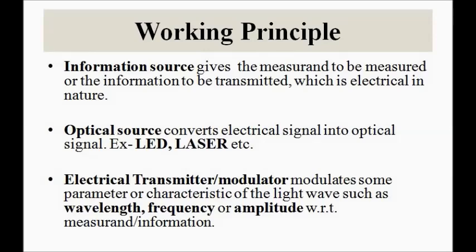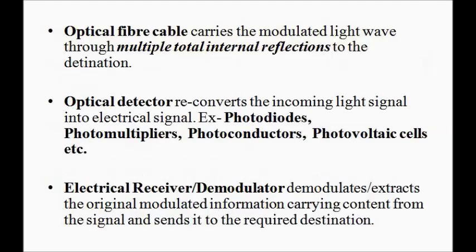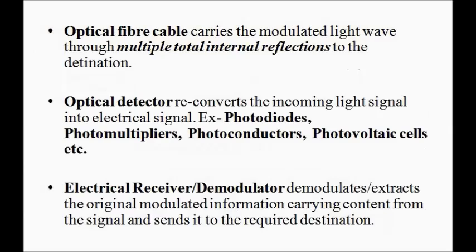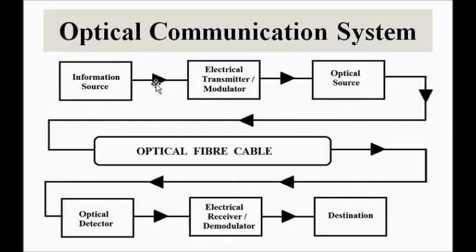The electrical transmitter modulator performs the modulation — a change in the wavelength, frequency, or amplitude of the light signal according to the signal from the information source. After modulation is done, the signal is transmitted across the optical fiber cable, which is the transmission medium. Fiber optics is itself a separate and vast concept. The optical fiber carries the modulated light wave through multiple total internal reflections from the sender side to the receiver side.